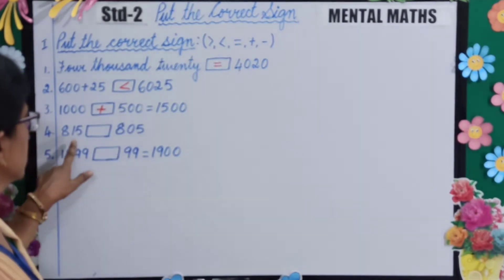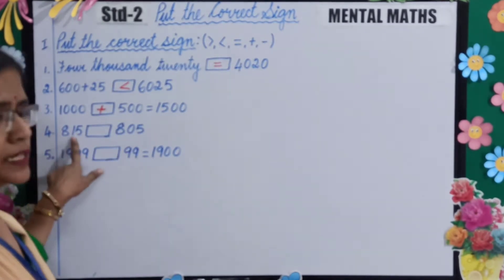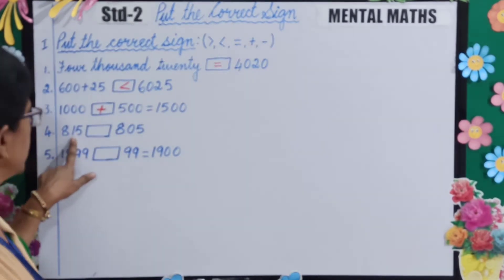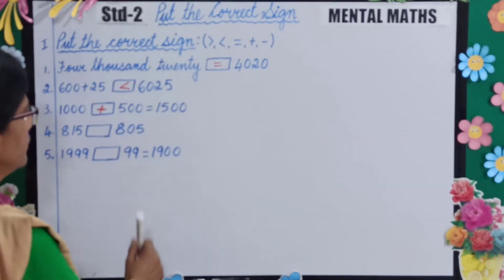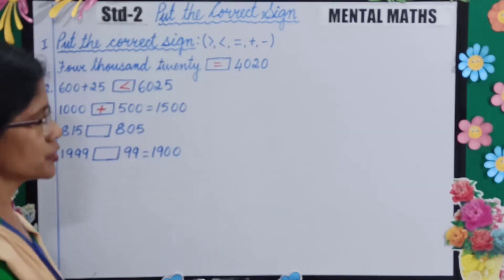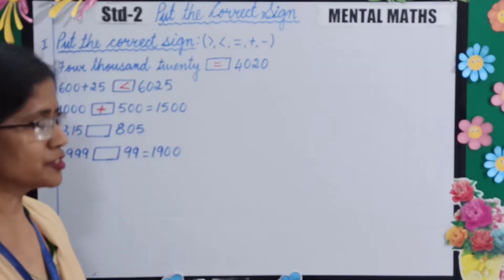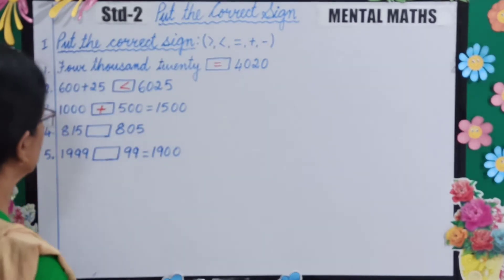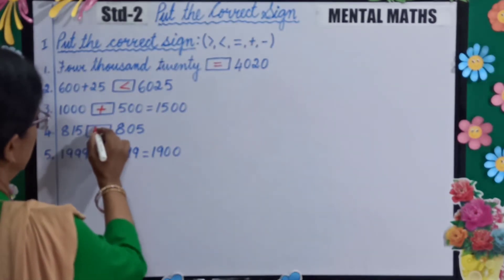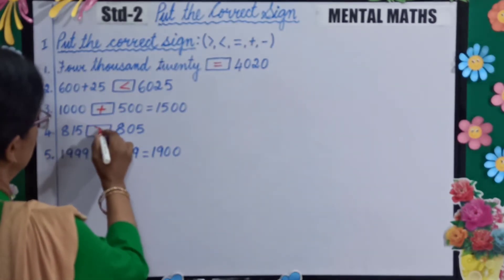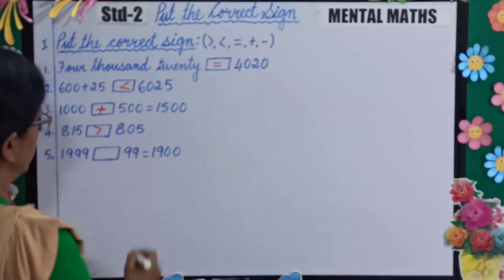Next: 815 dash 805. So which is greater, children? 815 is greater.